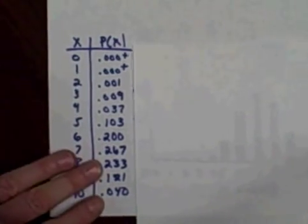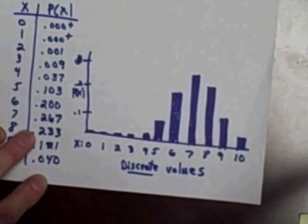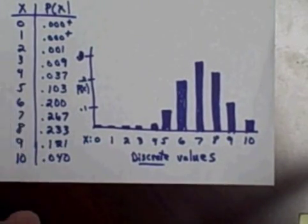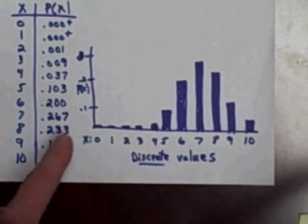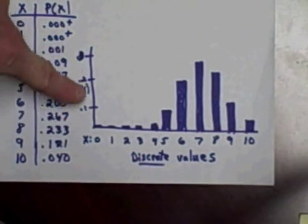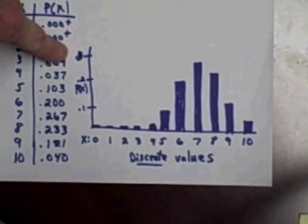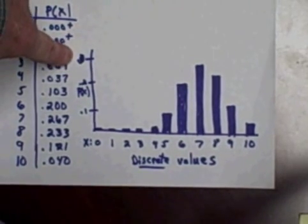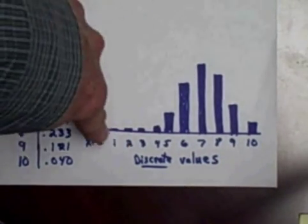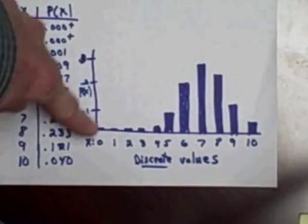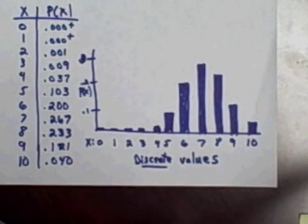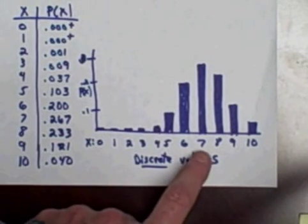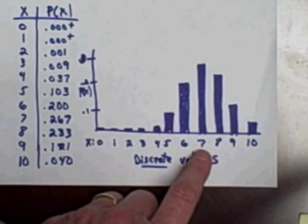Again, this shouldn't be any big surprise to many of you. Now if I take this information from this table and create a histogram, then my histogram is going to look like this. I simply take these exact values - on my x-axis I've got zero through ten, on my y-axis I've got probabilities starting at zero and going up to point three - and I've simply taken these probabilities and created vertical bars for the histogram.